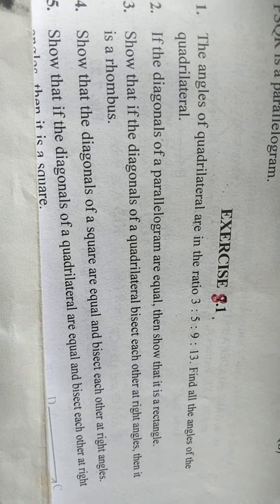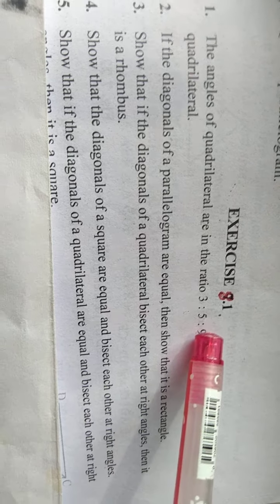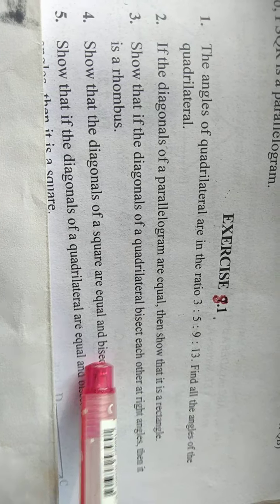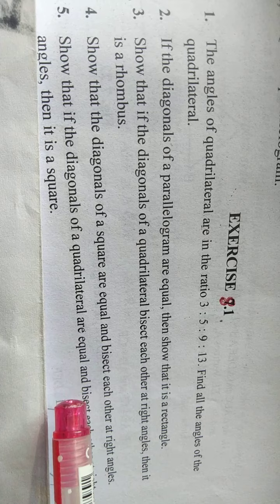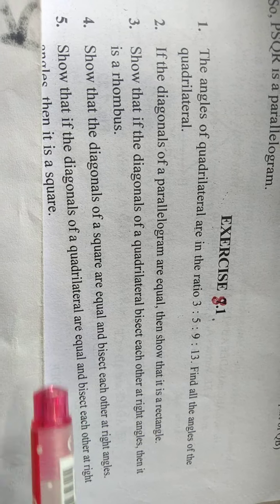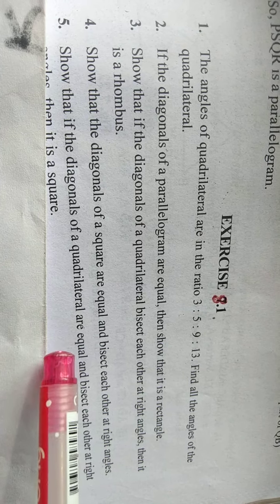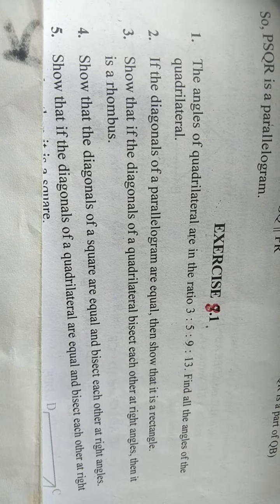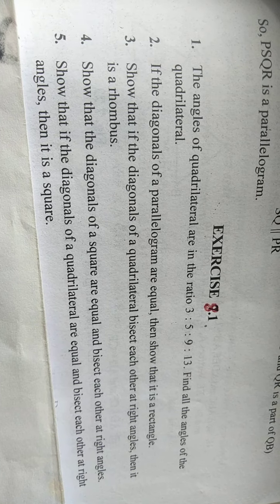Hello children, welcome to today's class. In my previous class I solved questions of exercise 8.1 up to the 4th question. Now for the 5th question, it is just the converse of the statement of the square: in a quadrilateral, if the diagonals are equal and bisect each other at right angles, you should prove it as a square.